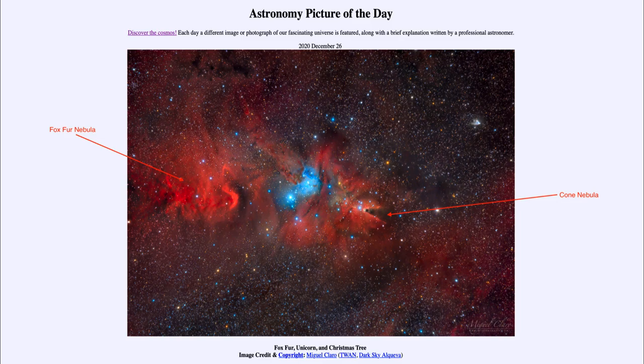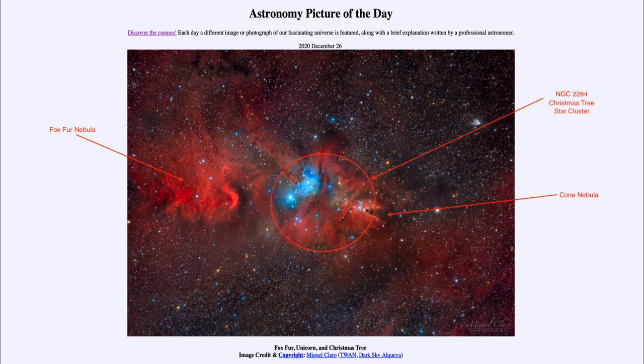Now the cone nebula points in towards the Christmas tree that we're seeing here. And the Christmas tree is actually the star cluster known as NGC 2264 or the Christmas tree star cluster. And that is lying on its side here. So it might be a little harder to see.